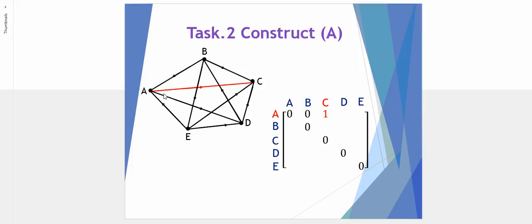A does though have dominance over C because the arrow goes from A to C, so we enter a one. Again, A has dominance over D, so a one is entered. And finally, A does not have dominance over E - in fact, E has dominance over A from the direction of the arrow, so a zero is entered.